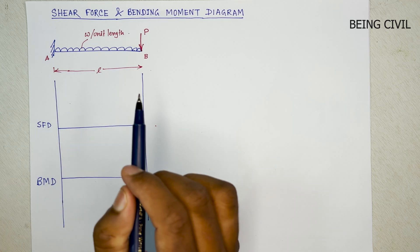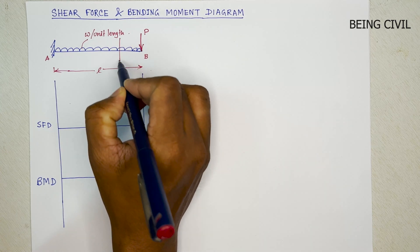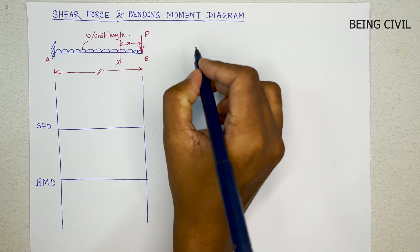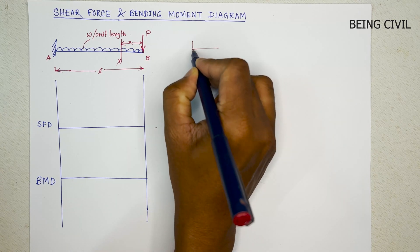So to draw the shear force and bending moment diagram, first we have to take the section X at a distance x from the free end. So we will first calculate the shear force of the section we cut.